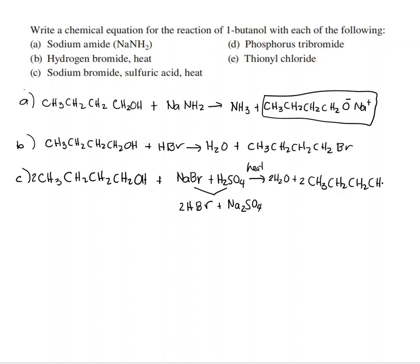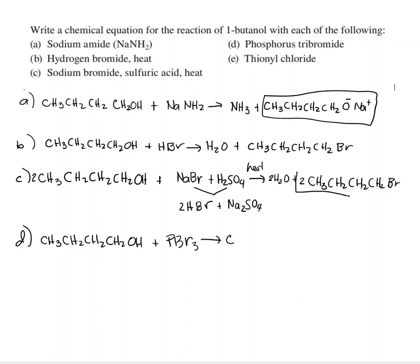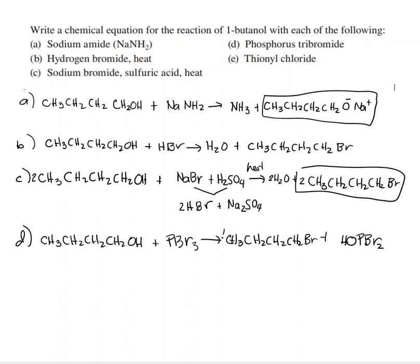You get CH₃CH₂CH₂CH₂Br — it's just like Part B. For Part D, 1-butanol reacts with PBr₃. One of the three Br's replaces the OH, giving CH₃CH₂CH₂CH₂Br, and the remaining PBr₂OH is the other product.